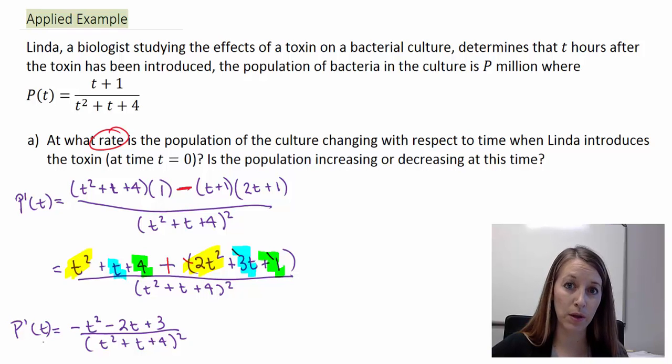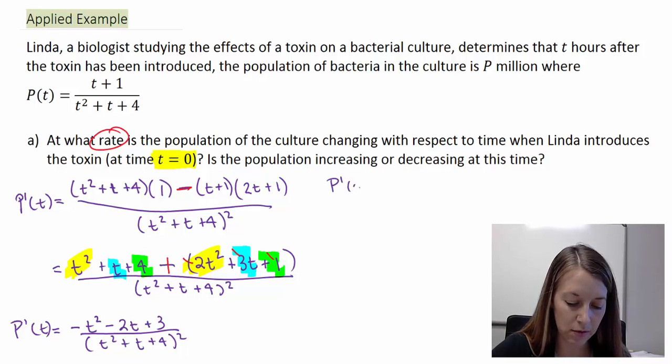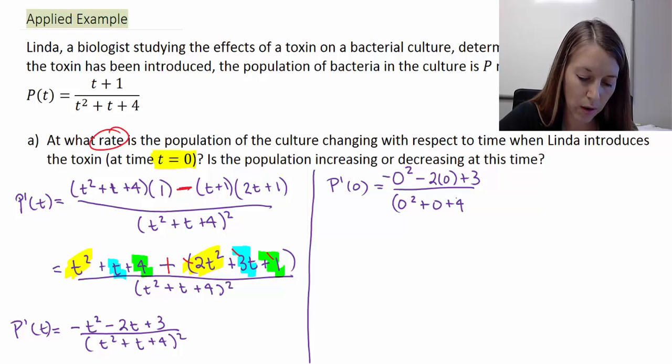So now I can go back and I can continue to read what this is actually asking. At what rate is the population of the culture changing with respect to time when Linda introduces the toxins, meaning at the very beginning stages at the very first step. And if that doesn't tell you what to do, it gives you an extremely strong hint here. And that is at our initial time when T is equal to 0. So we need to figure out what P prime of 0 is. Well, since we have what P prime of T is, we are just going to plug 0 in for our equation. So we have negative 0 squared minus 2 times 0 plus 3 all over 0 squared plus 0 plus 4 quantity squared. And this is nice because all of these 0 things cancel out. So that is going to make the simplification extremely easy.